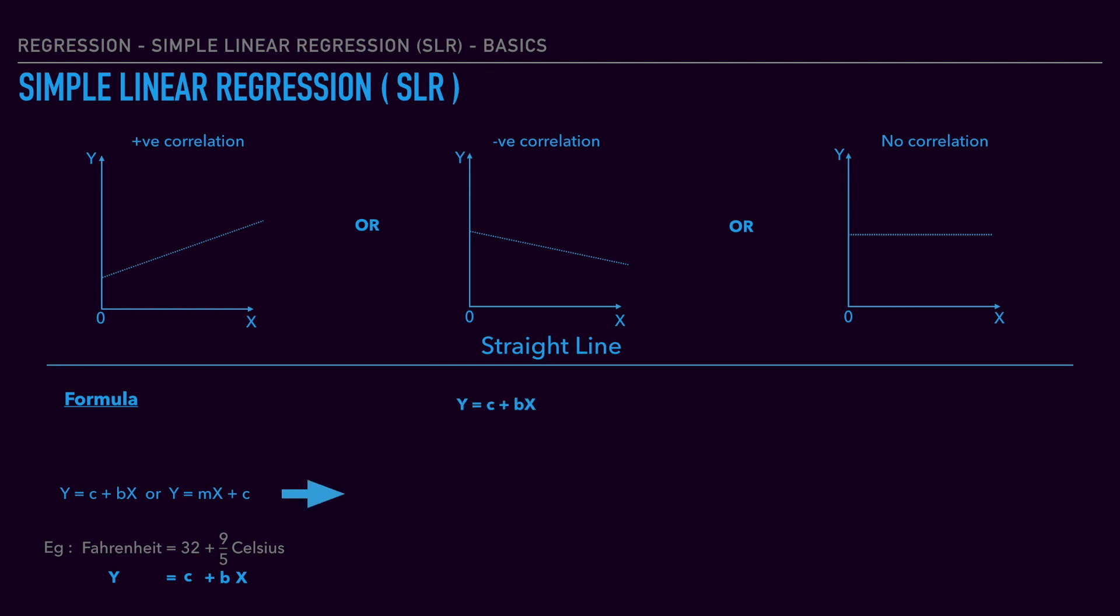To understand the formula: y = c + bx, where x is the input variable or independent variable, y is the output variable or dependent variable, c is the constant, and b is the coefficient or slope of x. Now, let's talk about pictorial representation.